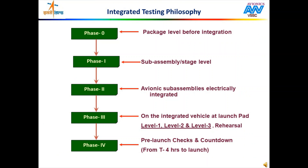Any package used in a launch vehicle system undergoes a series of tests and evaluations before the rocket is launched. The first in the series is phase 0 testing, to evaluate performance at package level before integration. The tested package is then integrated with the respective sub-assembly or stage — this testing is called phase 1. All avionics sub-assemblies are then electrically integrated to carry out phase 2 testing. The integrated vehicle at the launch pad then undergoes phase 3 testing. Performance during phase 3 testing is evaluated to authorize the launch. Before launch, during the countdown, phase 4 of the testing series is carried out.